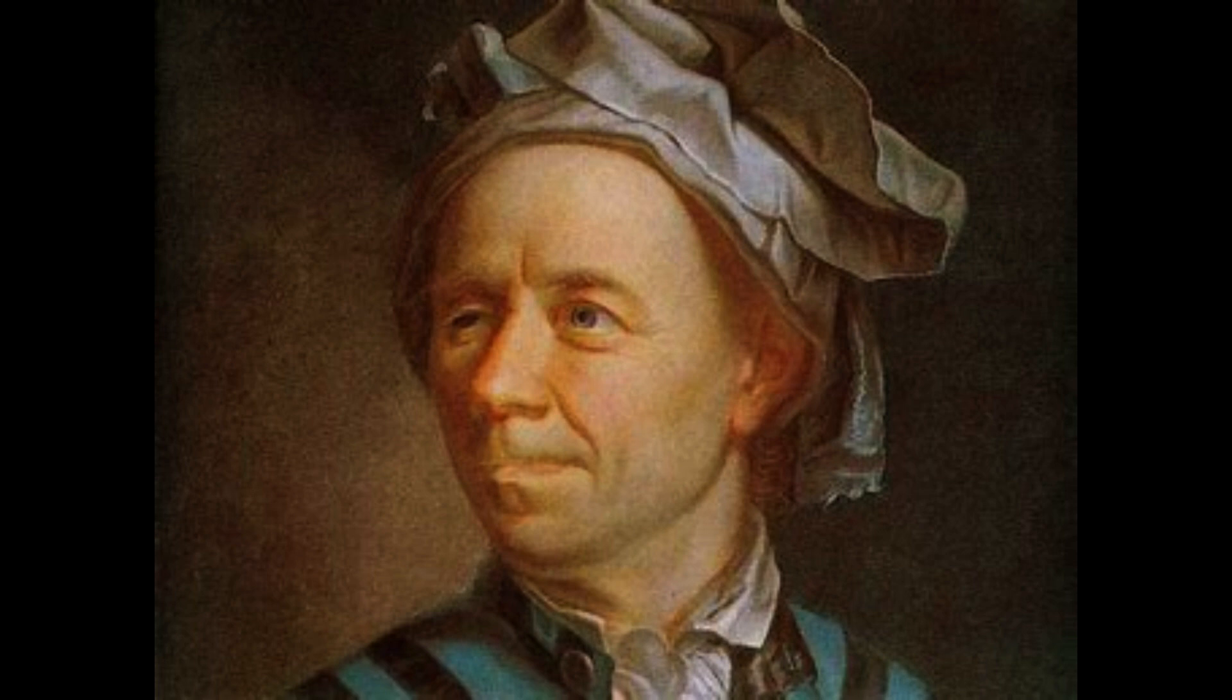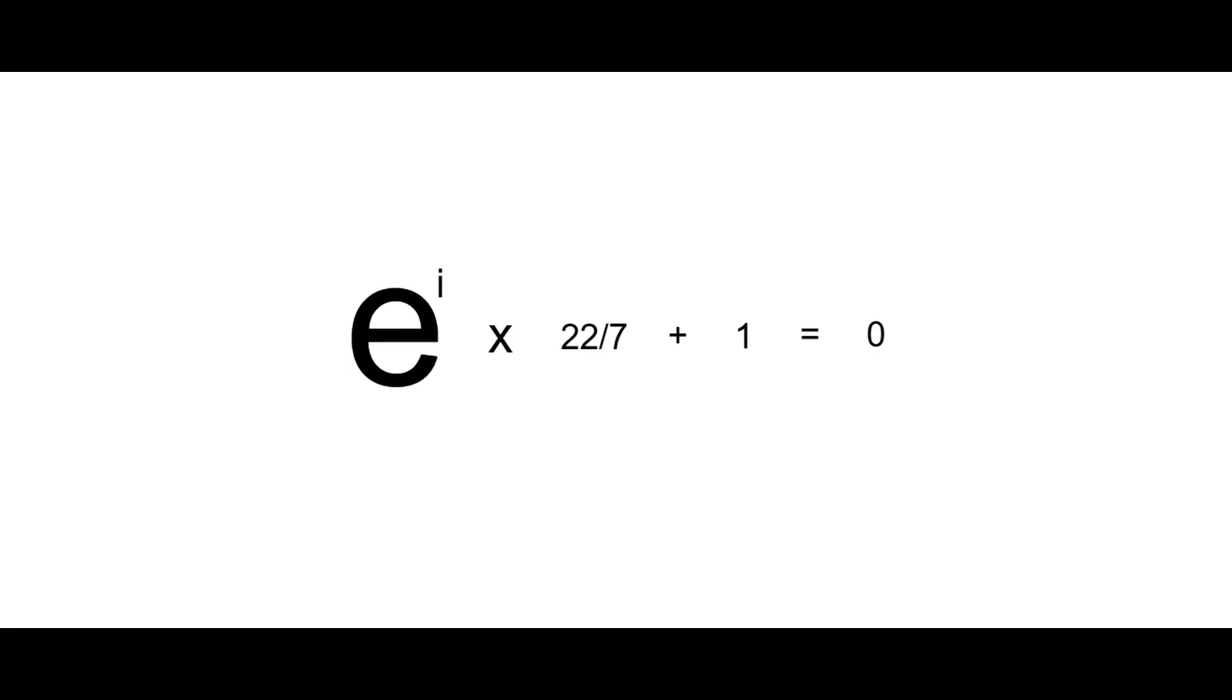His insights and discoveries paved the way for this astonishing equation. In conclusion, Euler's identity is a mesmerizing equation that brings together e (Euler's constant), i (the imaginary number), and pi (the circle's constant).